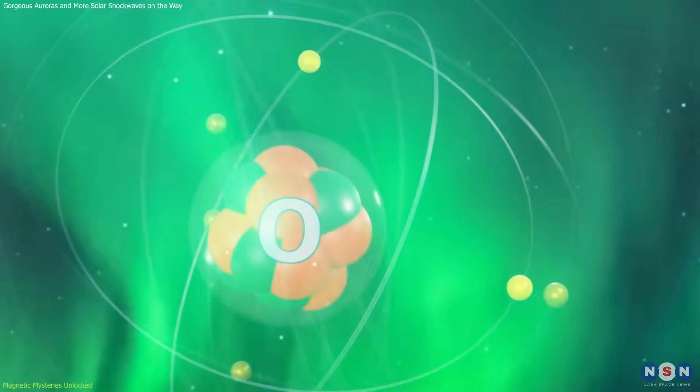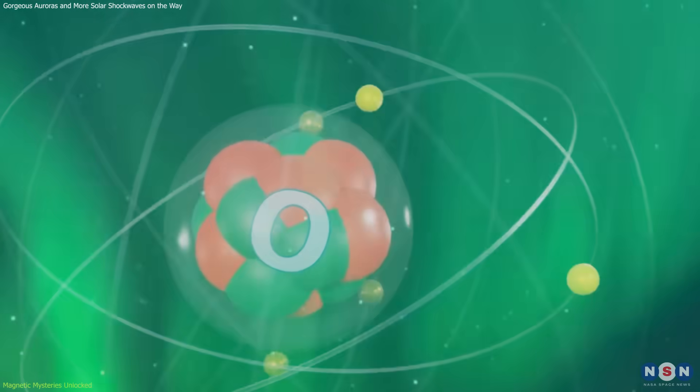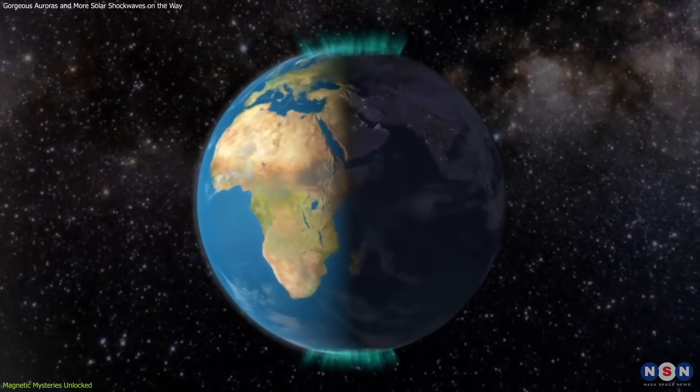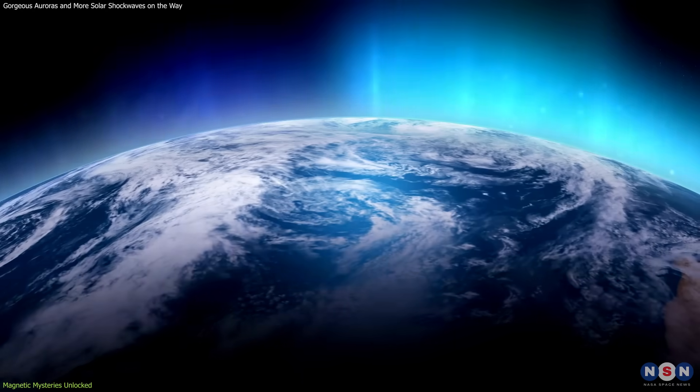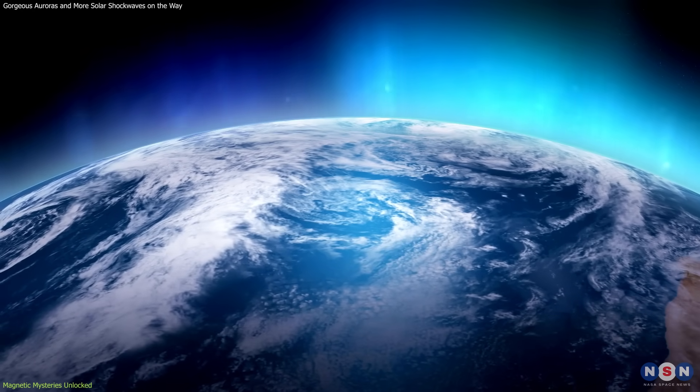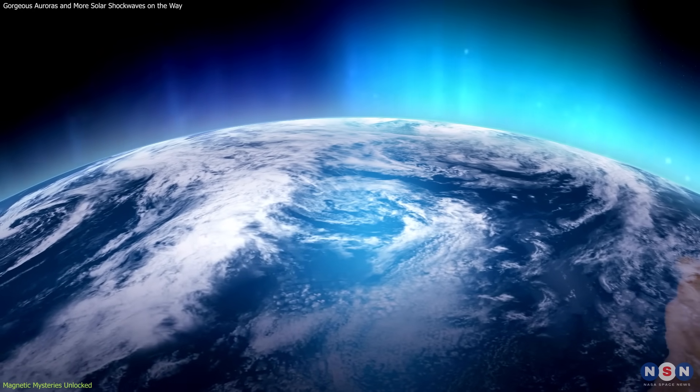Oxygen emits a gorgeous green or sometimes a rare red light when hit by these particles at altitudes of about 60 to 150 miles above the Earth. Meanwhile, nitrogen can produce blue or purplish-red hues at even higher or lower altitudes.